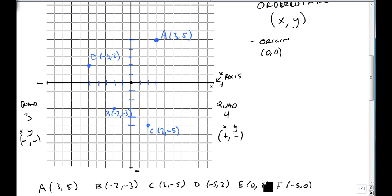Our last two points: E is at (0, 3). Well, 0 means he doesn't go left or right. He just stays right here on the line and he goes up 3. And we say that E, this (0, 3) point, he's not in a quadrant. He's on the y-axis.